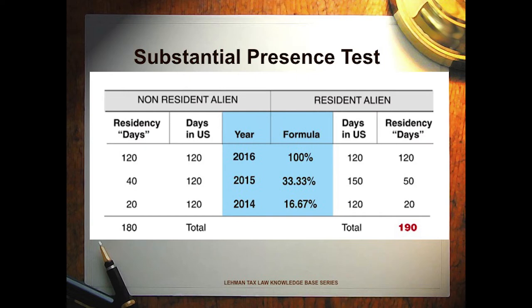As long as the non-resident alien under that standard has not spent more than a total of 182 days in the United States in 2016 — counting all three of those years — the non-resident alien continues to be a non-resident alien taxpayer who is only taxed on their U.S. source income. The moment they exceed 182 days under that formula, the non-resident alien becomes a U.S. taxpayer.